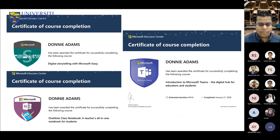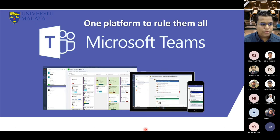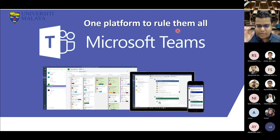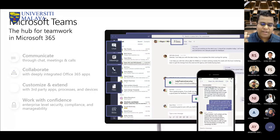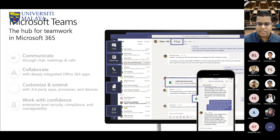This morning we are going to start with Microsoft Teams. There's a very nice tagline: 'One platform to rule them all' — similar to Lord of the Rings. What is so unique about Microsoft Teams is that it can function both as an instant messaging app like WhatsApp and as an online meeting platform like Google Meet. So you get two functions in one — you don't need to create a separate WhatsApp group for your class.